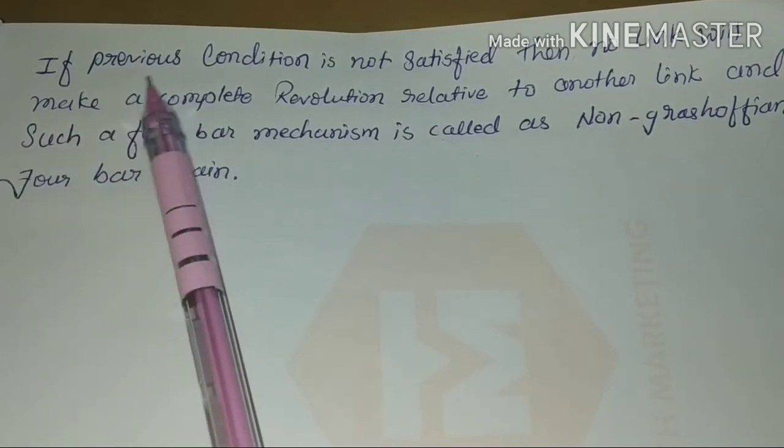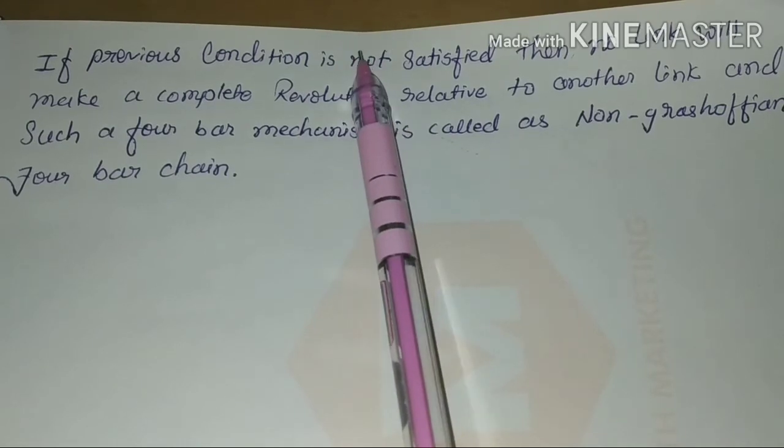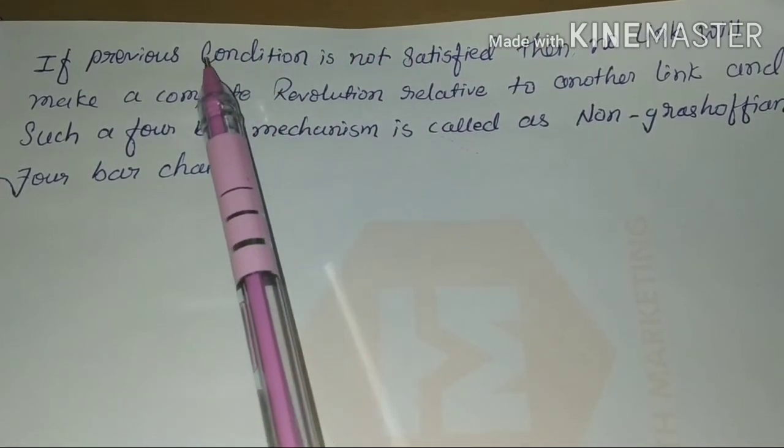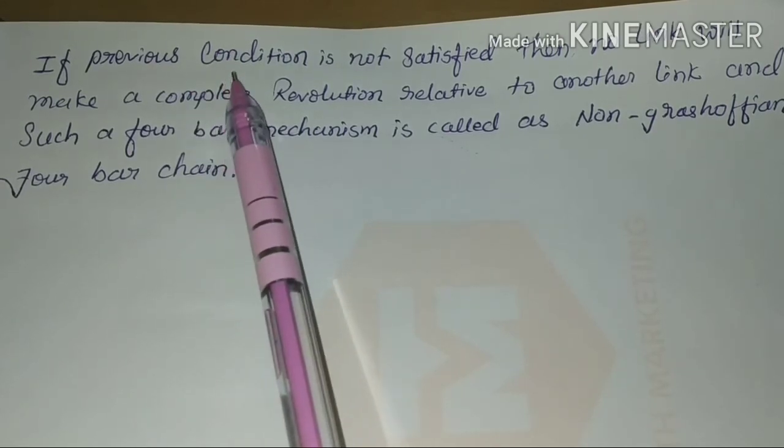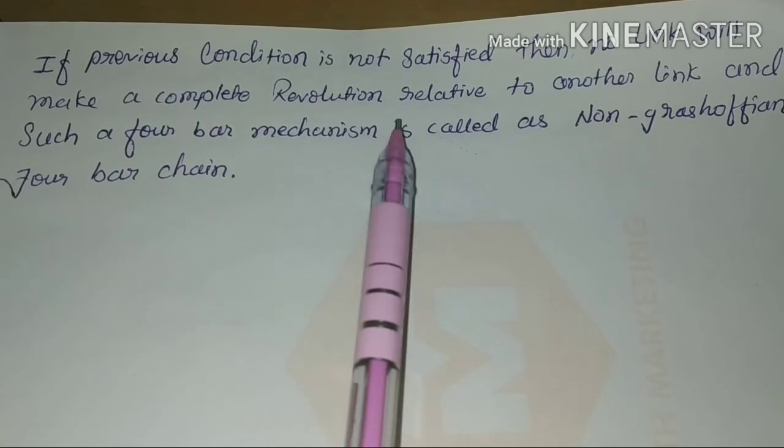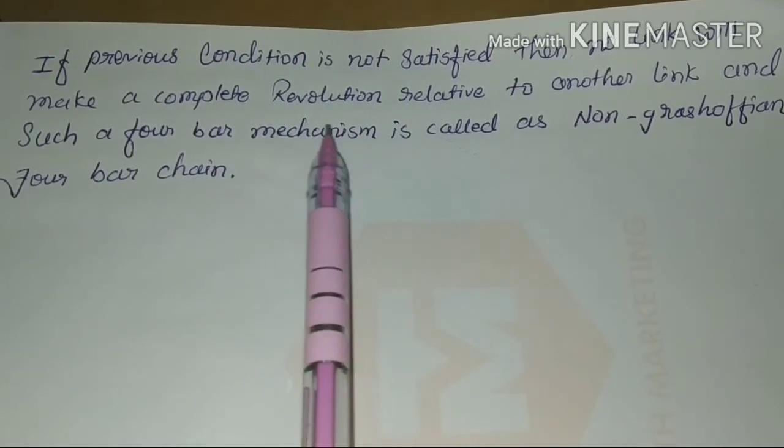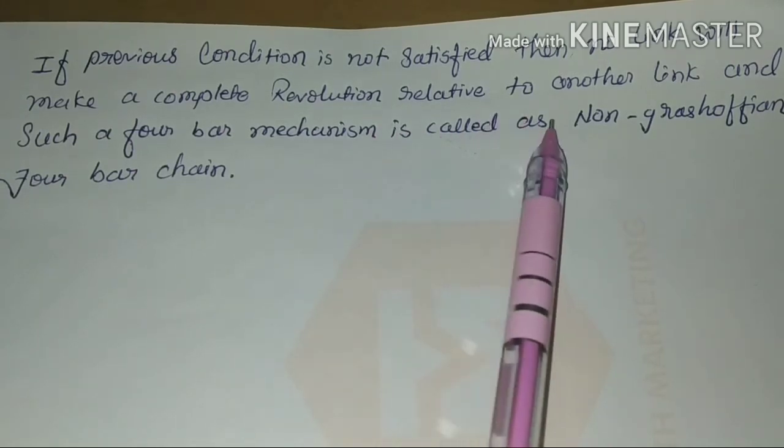If the previous condition is not satisfied, then any link will not make relative complete revolution, and this type of four-bar chain mechanism is called non-Grashovian four-bar chain.